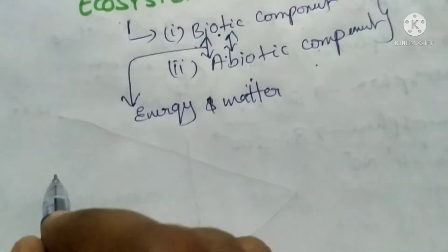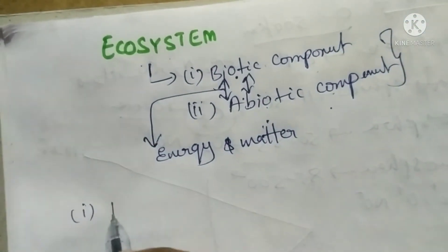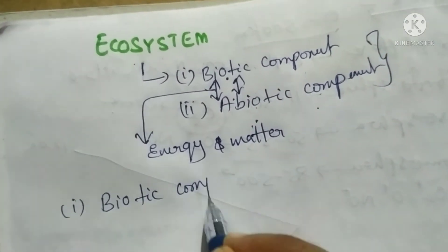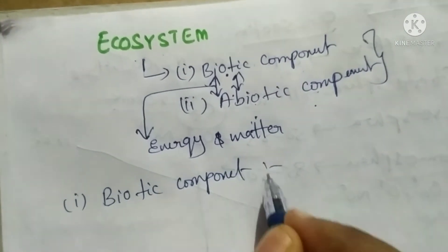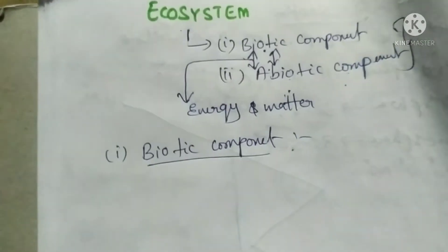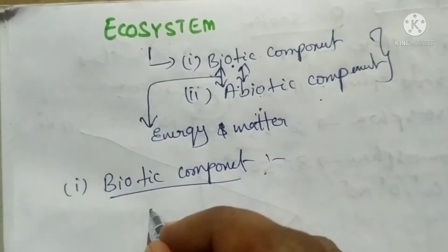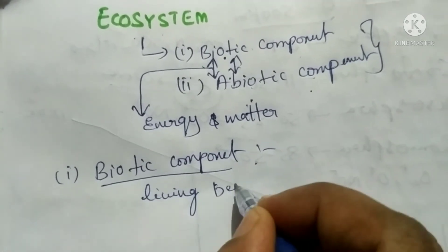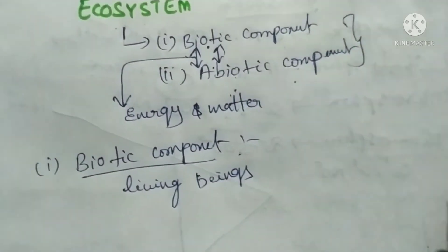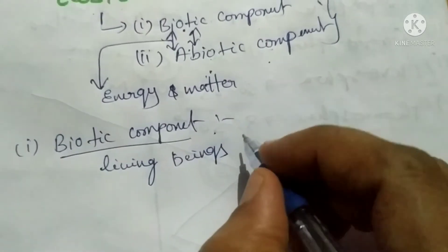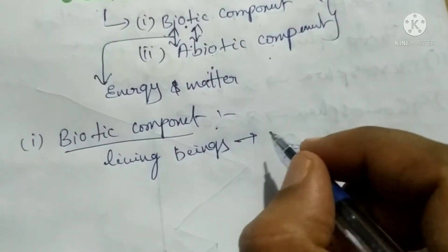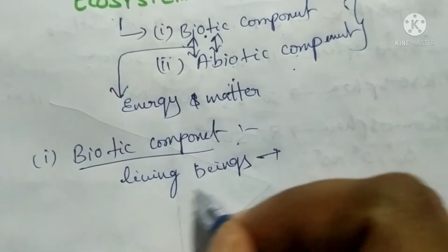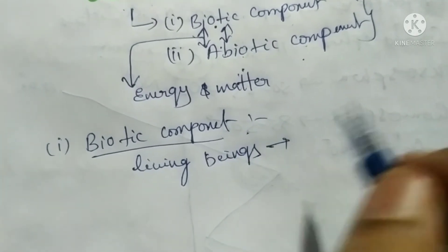Now let us discuss about the biotic component. Biotic means life — all the living beings. Biotic means all the living beings present in the environment are called the biotic components. Human beings, plants, and microorganisms all come into the biotic components.